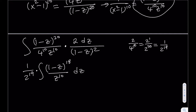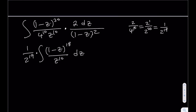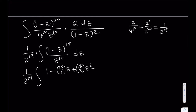This integral can be evaluated easily using the binomial theorem to expand (1 - z)^18. Expanding gives: 1 - 18 choose 1 · z + 18 choose 2 · z² - 18 choose 3 · z³ + … The terms alternate in sign because of the negative z, and even powers of z are positive.